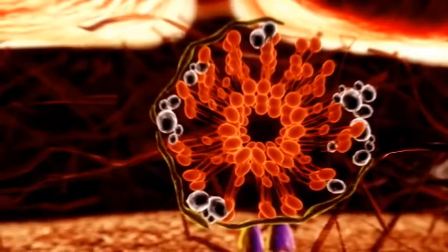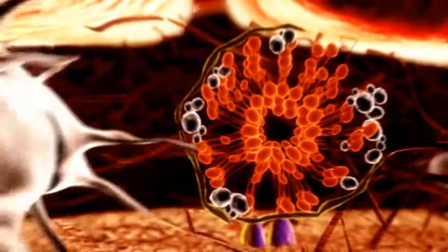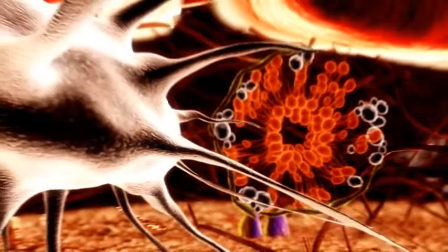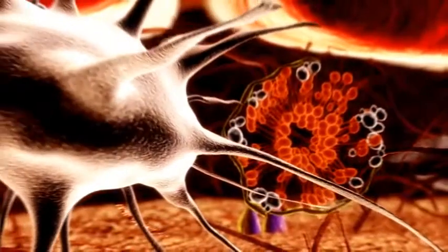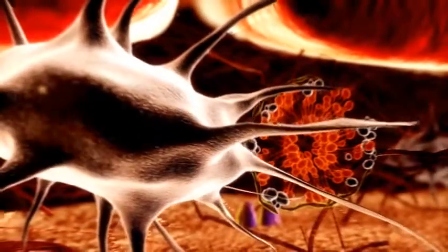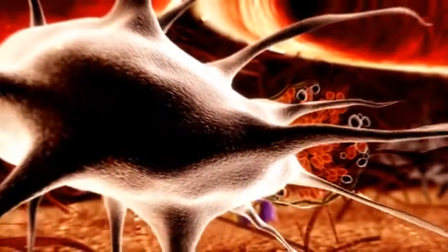When activated MGP binds to calcium crystals, it will form a natural defense for further crystal growth, thereby blocking this process. Calcium and phosphate will not be able to bind to the hydroxyapatite structures in the vasculature.